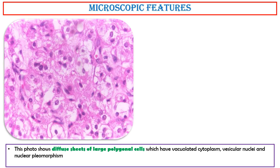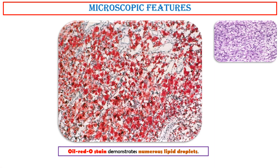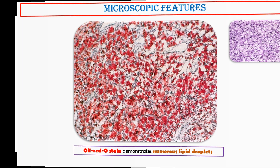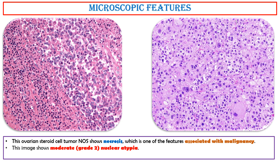This photo shows diffuse sheets of large polygonal cells with vacuolated cytoplasm, vesicular nuclei, and nuclear pleomorphism. Yellow-brown lipochrome pigment granules are frequently seen in the cytoplasm of steroid cell tumors. Oil red O stain demonstrates numerous lipid droplets in this photo. This ovarian steroid cell tumor, not otherwise specified, shows necrosis, which is one of the features associated with malignancy. This image shows moderate grade 2 nuclear atypia.